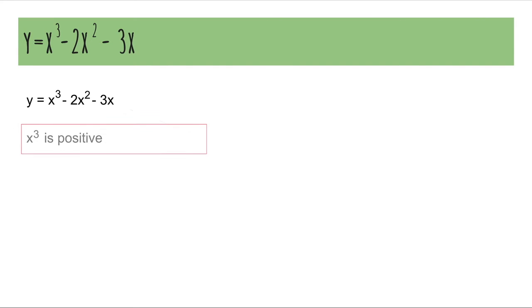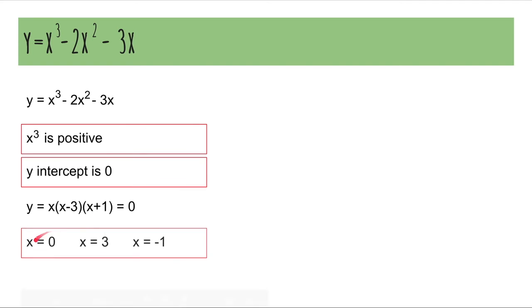Okay. So, we know the x cubed term is positive, so it's going to start from the bottom. We know the y-intercept is 0 because there is no constant. The constant is 0. If we factorize it, we get the solutions x is 0, x is 3, and x is negative 1.